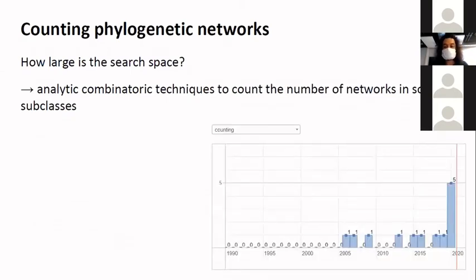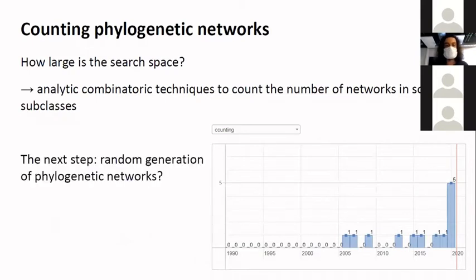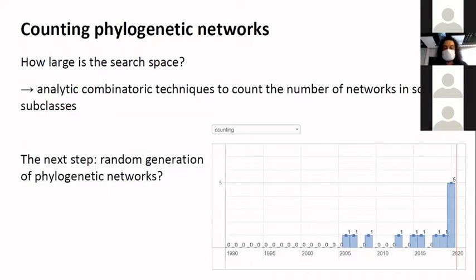What I find interesting is that it attracted the attention of many colleagues in mathematics — quite a few publications are about counting different kinds of such restricted networks. But also, it maybe opens a path for random generation of phylogenetic networks: when you know how to count them all, you can also generate them randomly with equal probability for each, uniformly. This is very important to make sure that you can sample the search space efficiently.